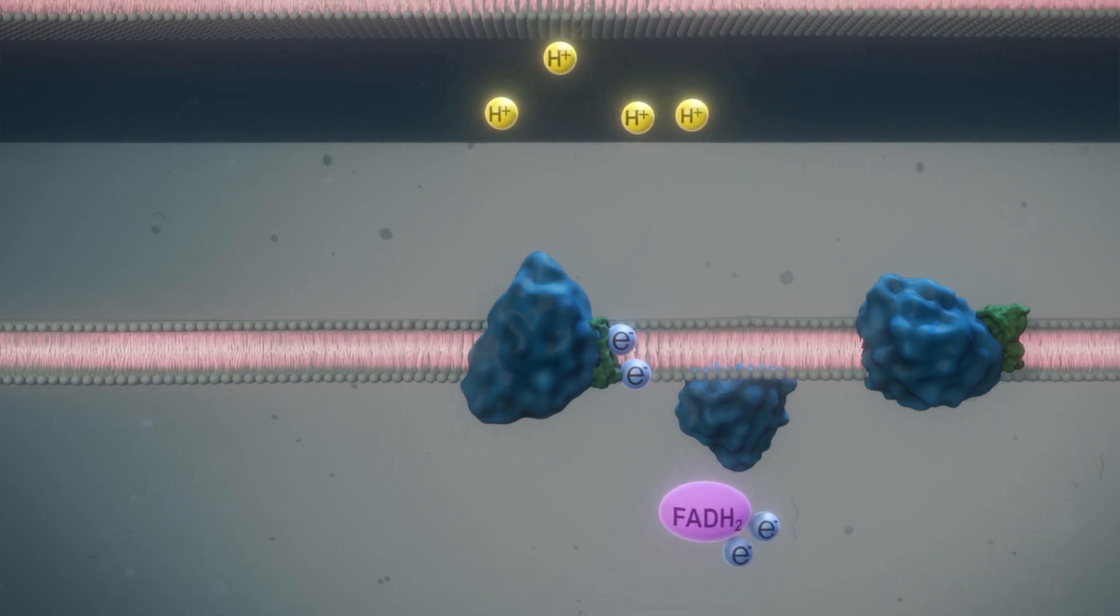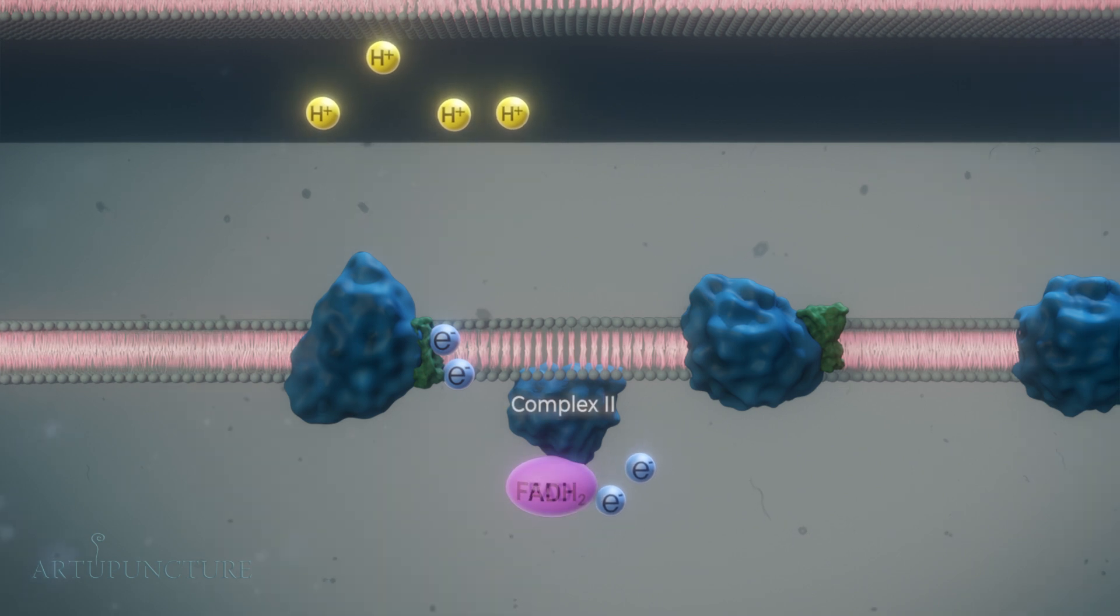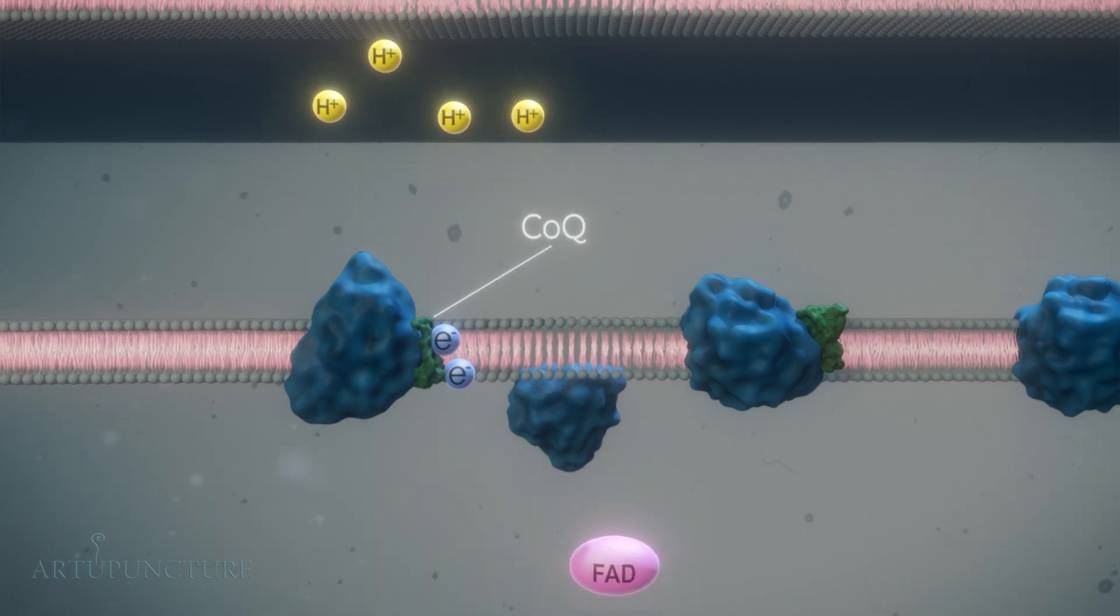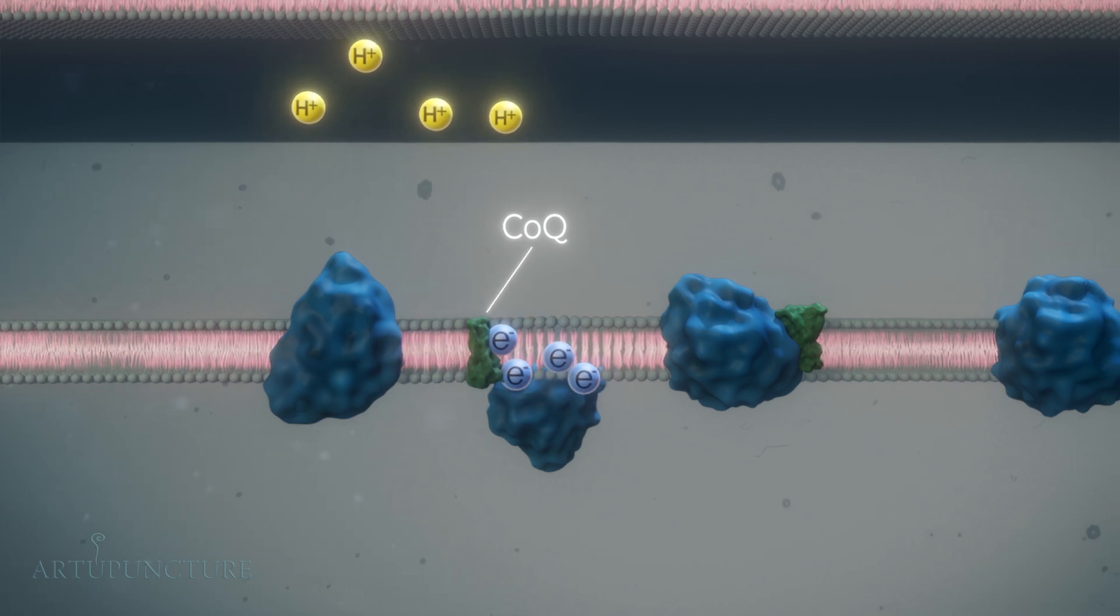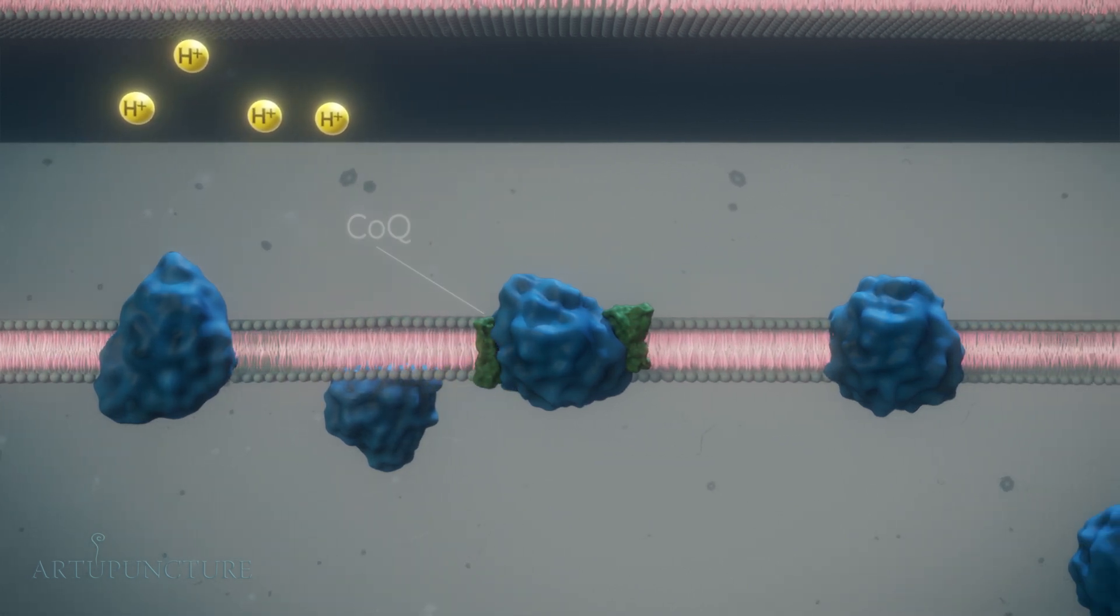FADH2 donates its electrons to complex II, where it is oxidized to FAD. Coenzyme Q collects electrons from complex I and complex II and carries them to complex III.